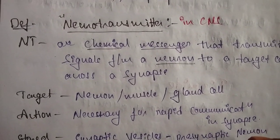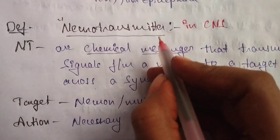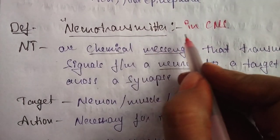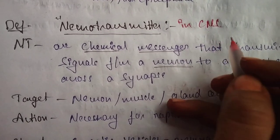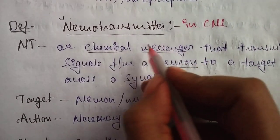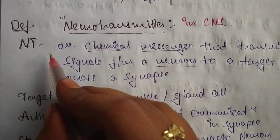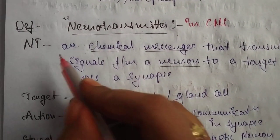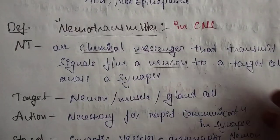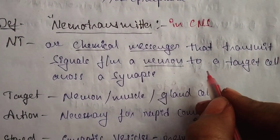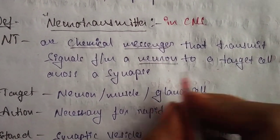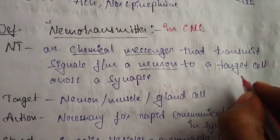Hello, today's topic is neurotransmitters in CNS. What is the neurotransmitter? Neurotransmitters are the chemical messengers that transmit signals from a neuron to a target cell across a synapse.